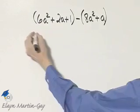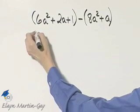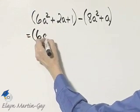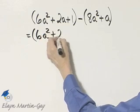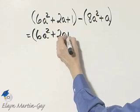Now remember how we subtract? I'll write down my first polynomial: 6a squared plus 2a plus 1.